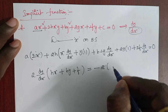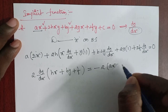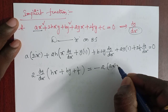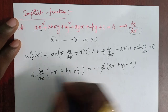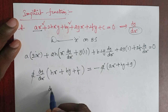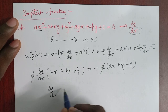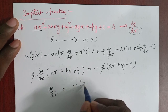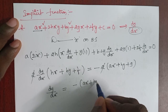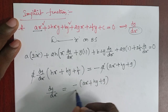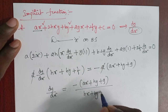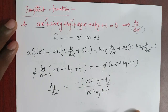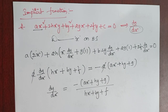Collecting terms: dy/dx(hx + by + f) = −(ax + hy + g). The 2s cancel. So the final result is dy/dx = −(ax + hy + g) / (hx + by + f). These are all the types of differentiation covered.